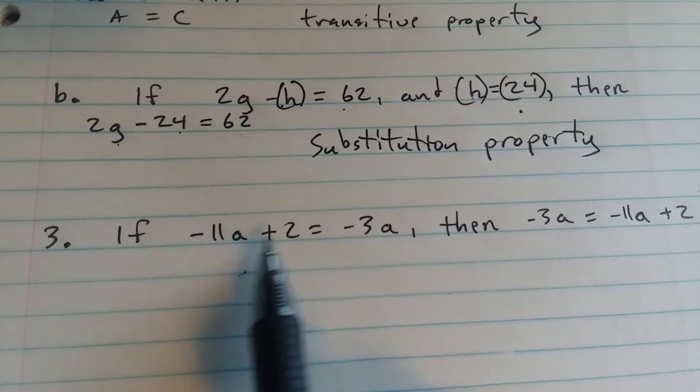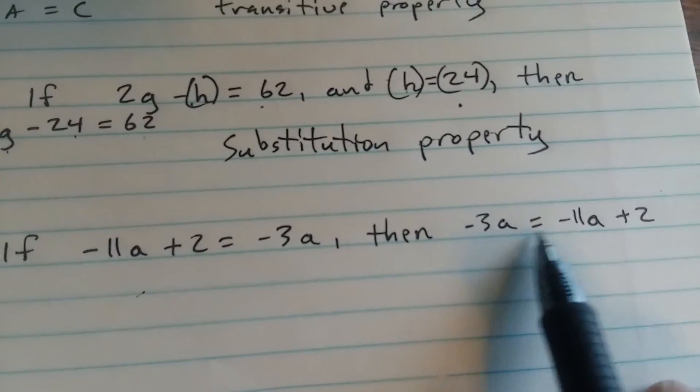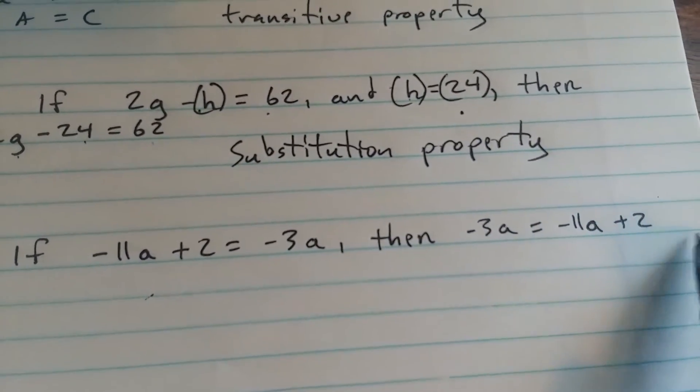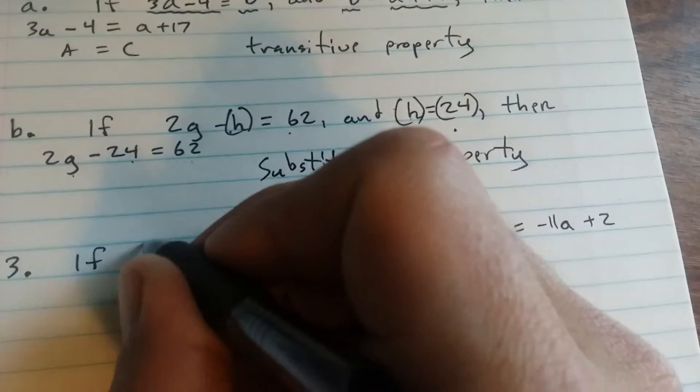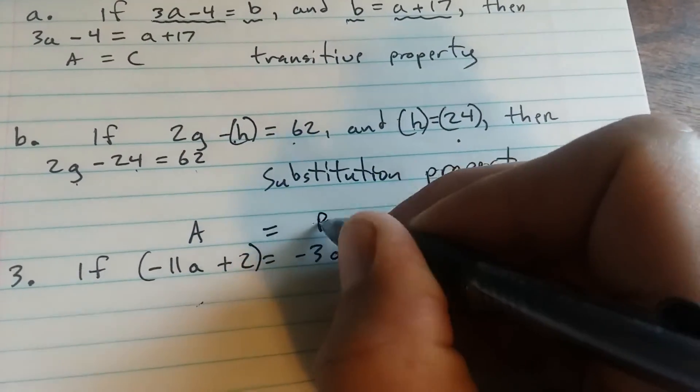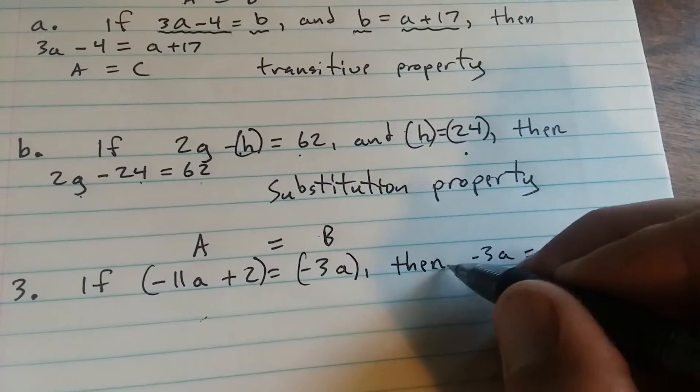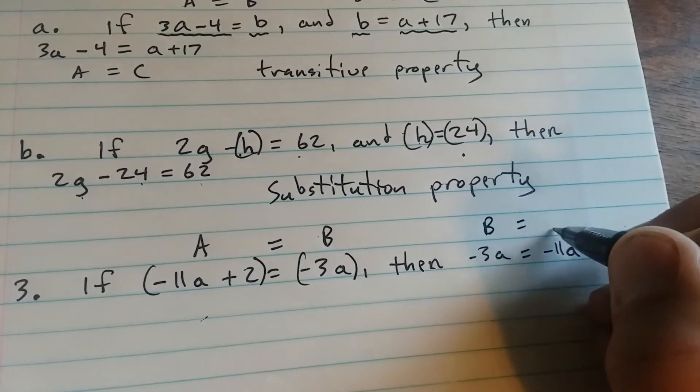You have negative 11a plus 2 equals negative 3a. Okay, then negative 3a equals negative 11a plus 2. You could think of this first part as being A equals B. Okay, the second part is being B. Then B equals A.